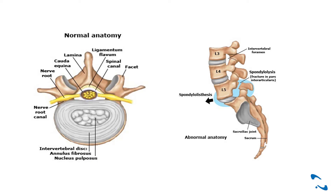Un'altra delle cause più frequenti è la spondilolistesi, ossia una dislocazione anteriore o posteriore di una vertebra rispetto ad un'altra, spesso associata alla lisi istmica, che porta inevitabilmente al restringimento del canale e quindi alla stenosi lombare. Di fatto però la causa più frequente rimane l'artrosi progressiva.